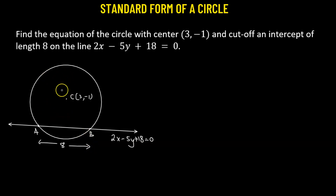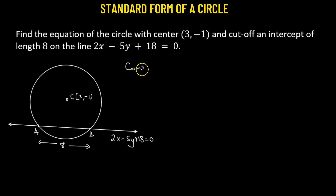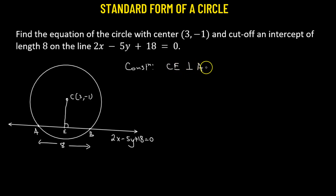Now we need to find the equation of the circle. To do so, we need two things: the coordinate of the center and the radius. We already have the center, so all we need is the radius. We'll begin by performing a construction — dropping a perpendicular from center C onto the line AB, meeting it at point E, so CE is perpendicular to AB. Since we have the equation of the line, we can find its slope, and from that, the slope of the perpendicular.